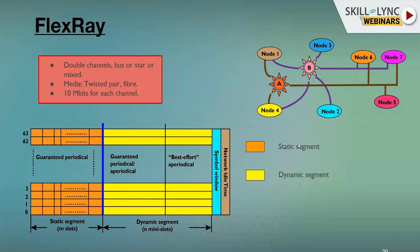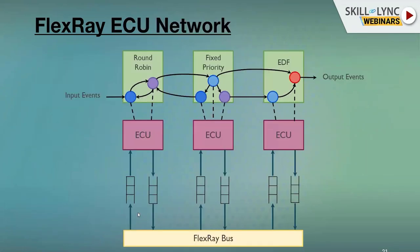This is an example of how one frame is sent and how time-triggered and event-triggered slots are managed. There is a static segment — fixed slots — and a dynamic segment — changeable slots. A FlexRay ECU network diagram shows how ECUs are connected with each other, with connections decided based on data and priority.